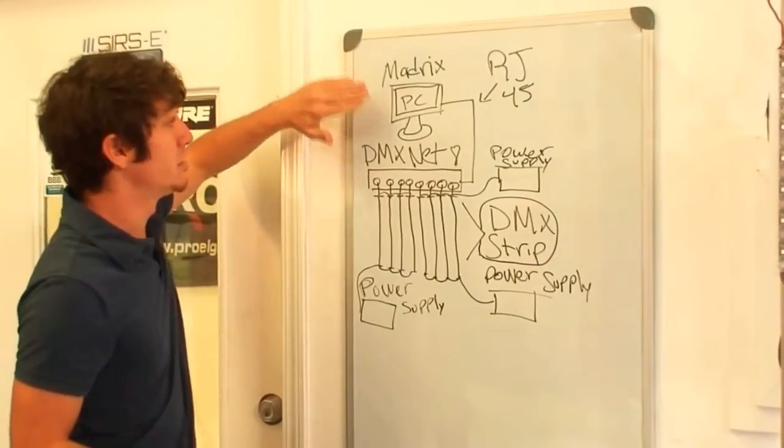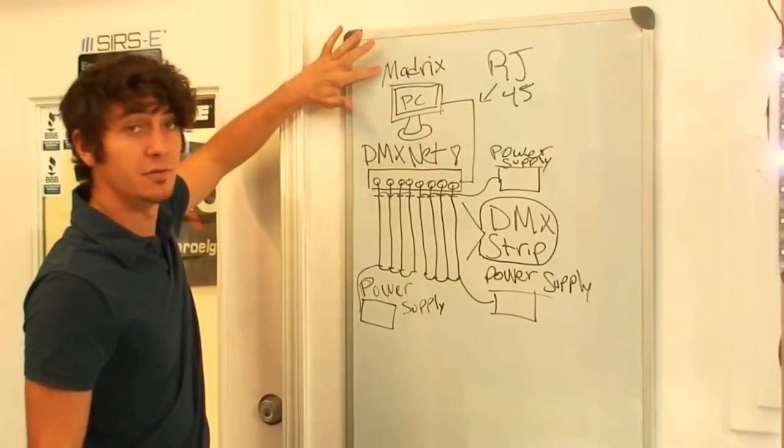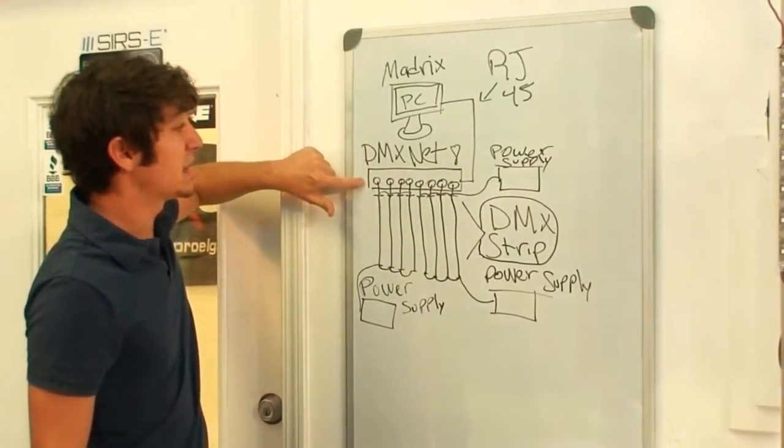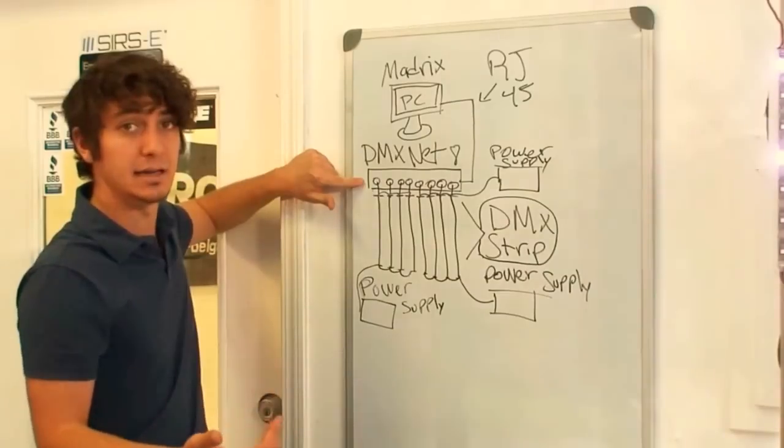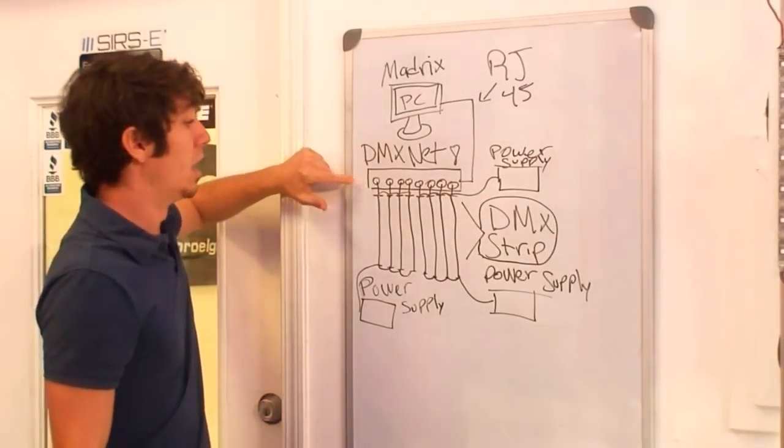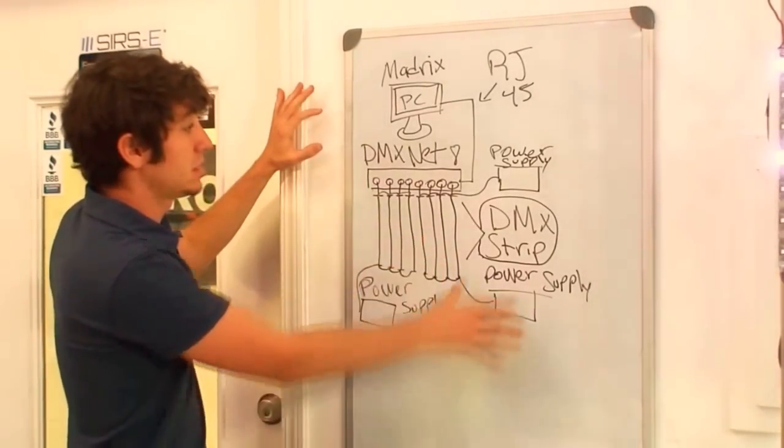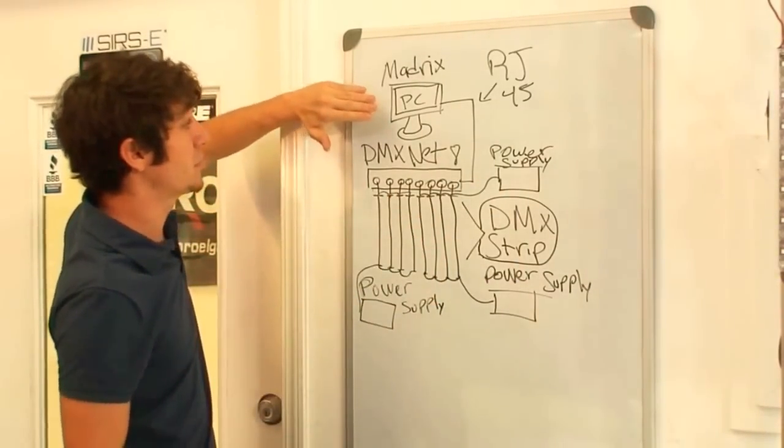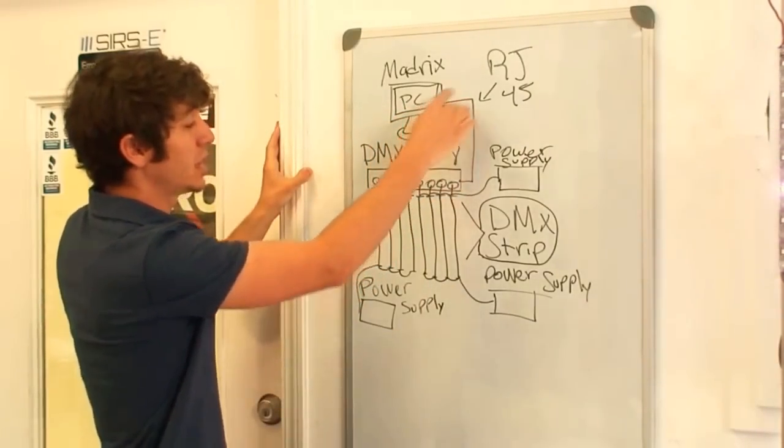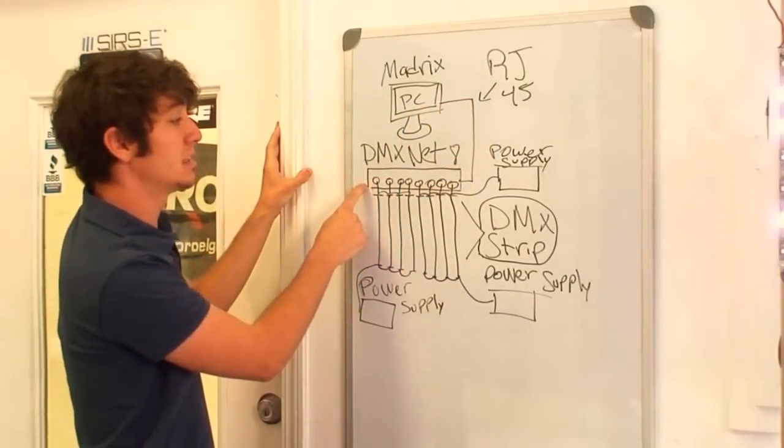The key components here are your PC with the Madrix software installed. Then you got your DMX net 8 or an Antec data gate. Either one will work. And then you got your LED strips and your power supplies. Basically from the PC you got an RJ45 or Cat5 cable connected to your DMX net 8.